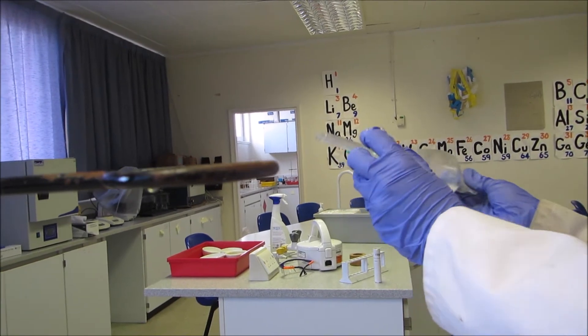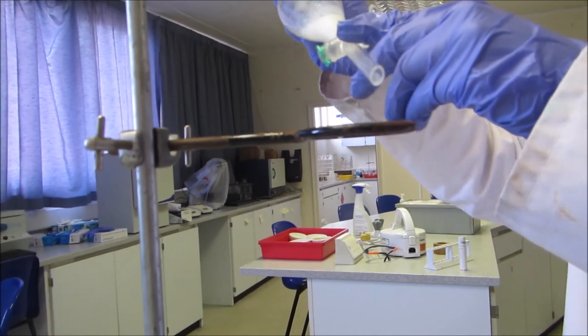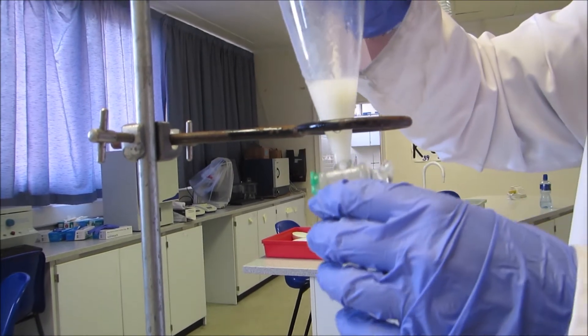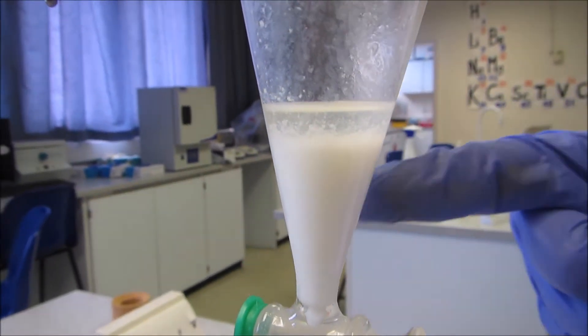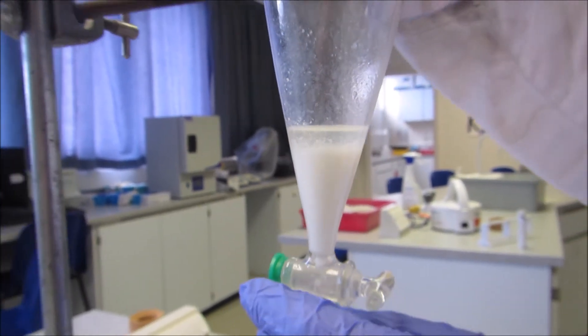So that should be enough. I'm now going to let it settle, and we should see two layers form. So it's now separated into two layers. We have our milk layer and our isopropanol with the fat.